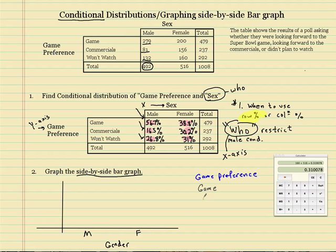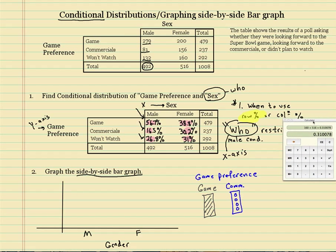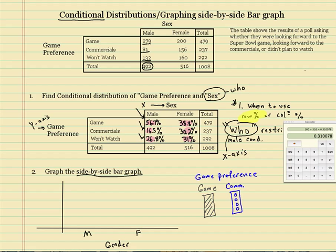We have three different categories. We have the game. So you have to do a box and you have to color it different than the other two. Let's go with commercials. You can get creative here, just make them a little different. And then we will go with won't watch. Now here, over here, these are going to be our percents. Let's take it to 50%.